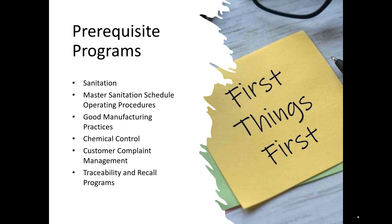So again, it depends on your situation. Are you a butcher, a food manufacturing premises, or a dairy? What business are you in? Depending on that, you have particular prerequisite programs that you should put in place. But to be honest, a lot of the ones I've mentioned here would be found in all those types of food premises.